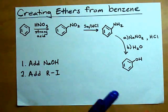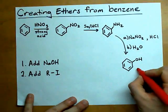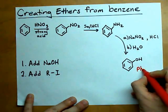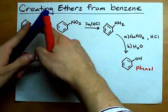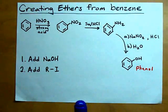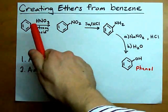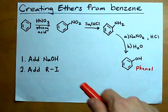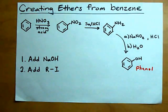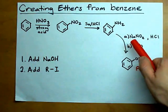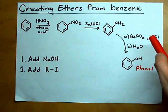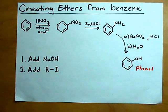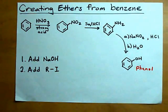This is how you make phenol out of benzene: strong HNO3, then reduction with tin and HCl, then reaction with sodium nitrite and HCl, and then treating with water to add the proton.